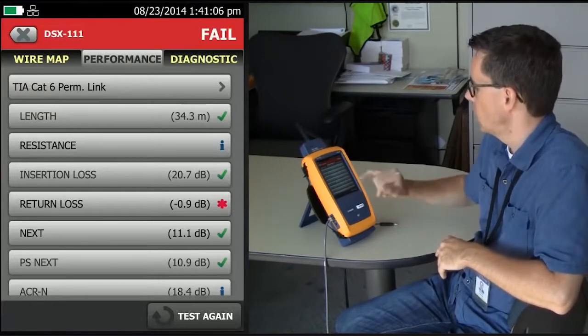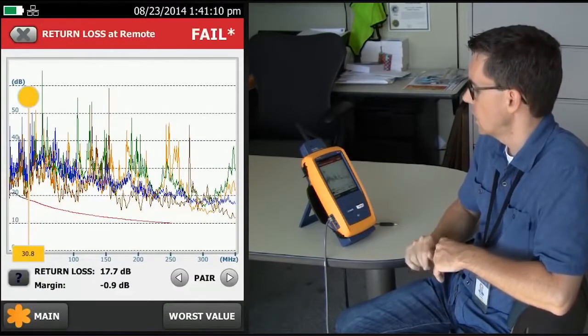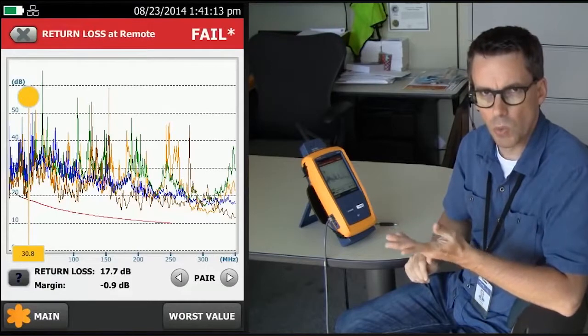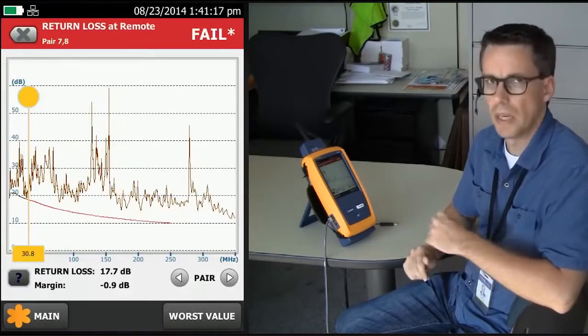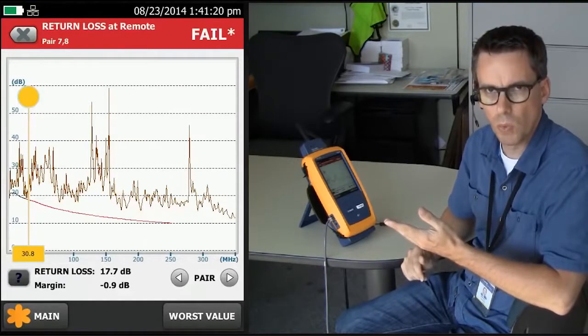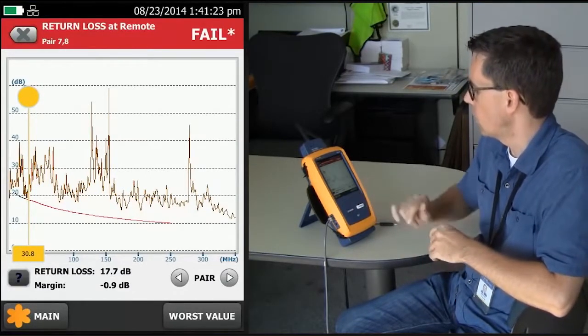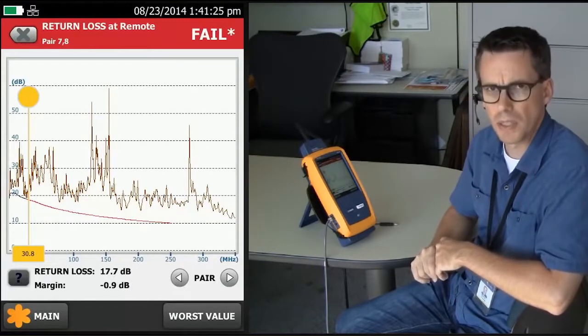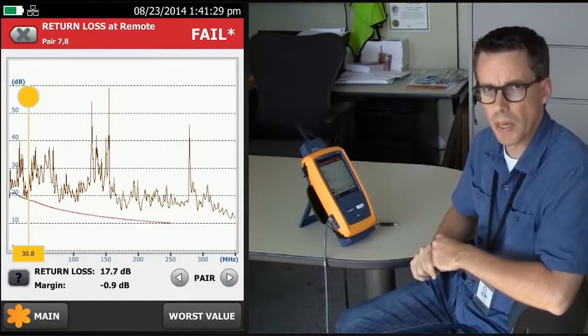If we tap on return loss, what we see here is all four pairs. And again, we want to see which is the worst performing pair. So if I tap here next to pair, it's going to automatically jump to the worst performing pair, the one that caused the fail, or actually the marginal fail of minus 0.9 dB. And in the top left-hand corner, it tells me it's pair 7.8.